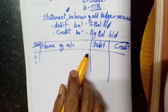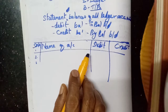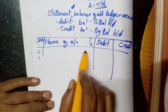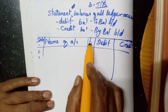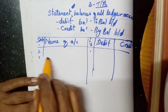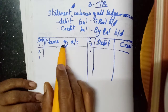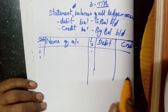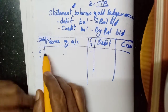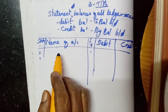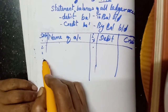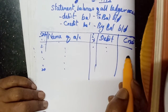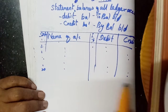So the format has five columns: serial number, name of account, ledger page number, and then debit and credit. We will write all the accounts one by one — around 20 accounts may come. We will write each account as either debit or credit.